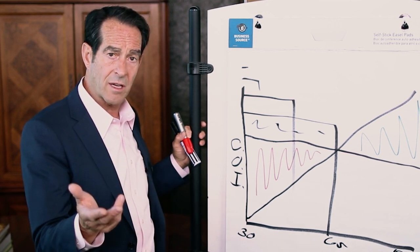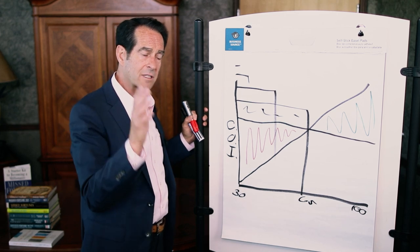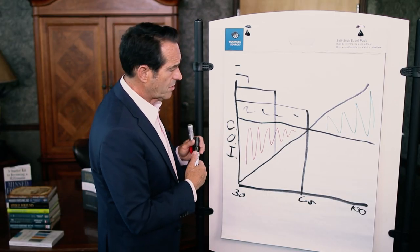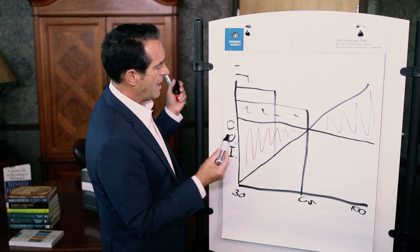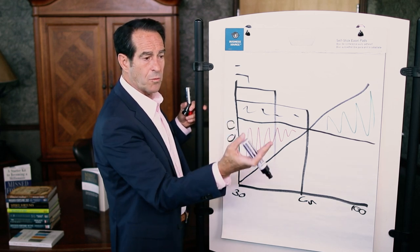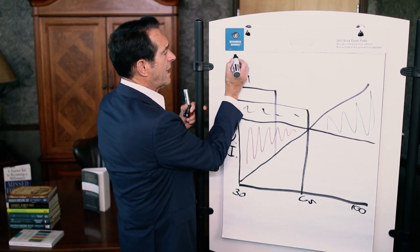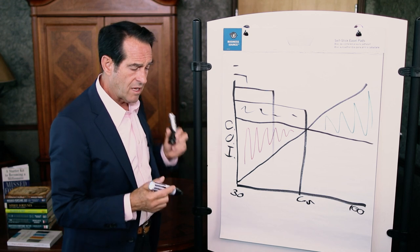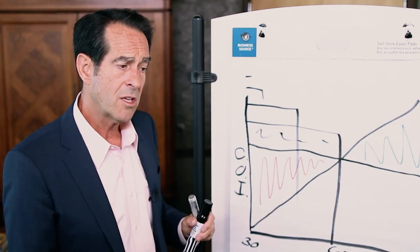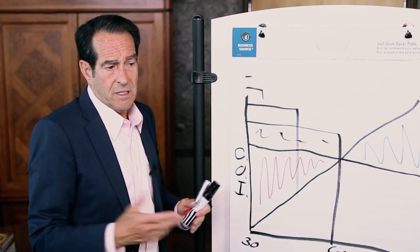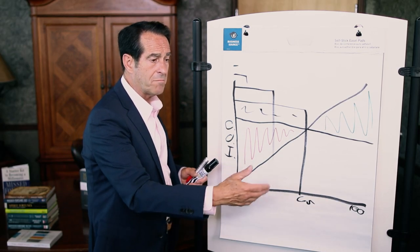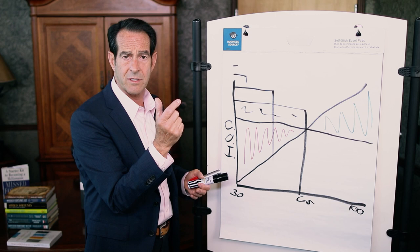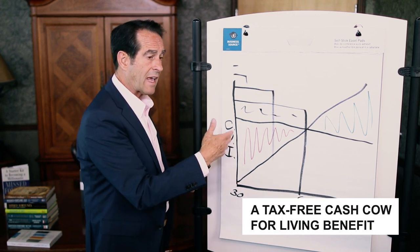The two types of cash value policies are whole life and universal life. With universal life, you can use it for death benefit and pay the least premium — sometimes lower than whole life. But when it was first introduced, it was designed to put in the maximum possible. You could put in a half a million dollars in one fell swoop. You want the least amount of insurance. The IRS says you've essentially self-insured: if you put in a million and the death benefit is a million one hundred thousand, the actual amount at risk to the insurance company is only the remaining hundred thousand. That's how universal life creates a tax-free cash cow for living benefit.